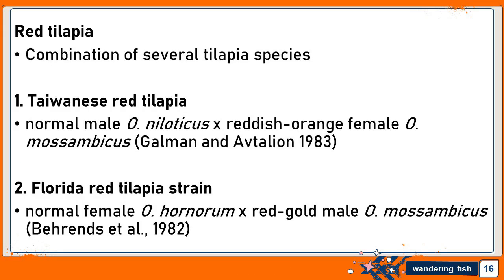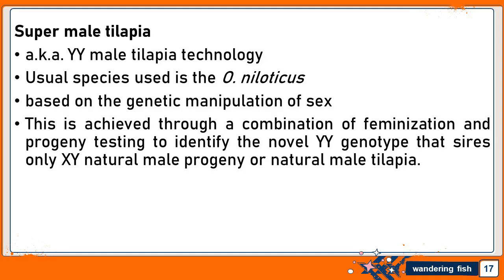Red Tilapia is a combination of several tilapia species. The Taiwanese Red Tilapia is the breeding of normal male Oreochromis niloticus and reddish-orange female Oreochromis mossambicus. The Florida Red Tilapia strain is the breeding of normal female Oreochromis hornorum and red-gold male Oreochromis mossambicus. In Super Male Tilapia, also known as YY male tilapia technology, the usual species used is Oreochromis niloticus. It is based on genetic manipulation of sex, achieved through feminization and progeny testing to identify the YY genotype that sires only natural male progeny.